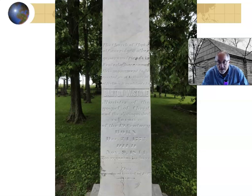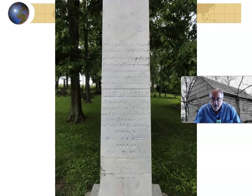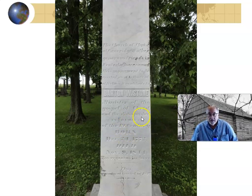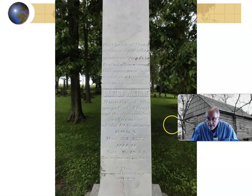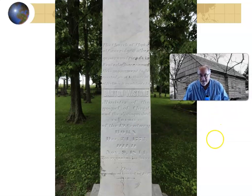Reportedly, Alexander Campbell, when he saw this marker calling Stone 'the distinguished reformer of the 19th century,' said it should read 'a distinguished reformer of the 19th century.' We'll talk more about Alexander Campbell later. I hope this has been informative and that you've learned a little bit along the way. We're going to end it here for now — I hope you have a great day. Take care.